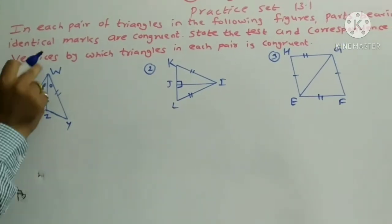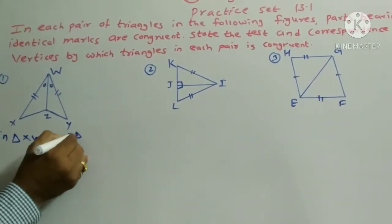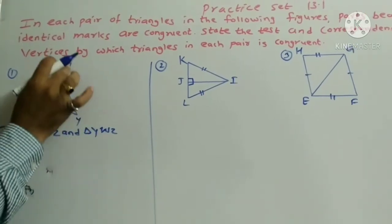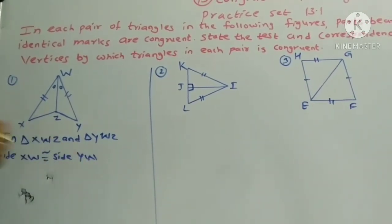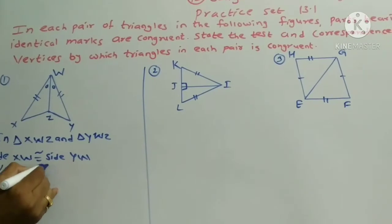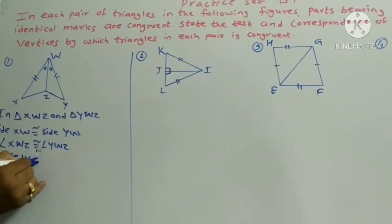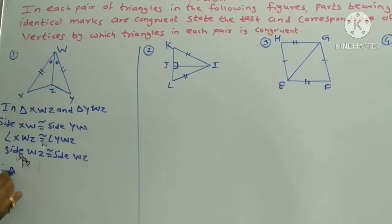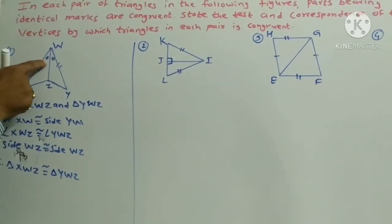We take triangle XWZ and triangle YWZ. In triangle XWZ and triangle YWZ: side XW is congruent to side YW, angle XWZ is congruent to angle YWZ, and one common side WZ is congruent to side WZ.